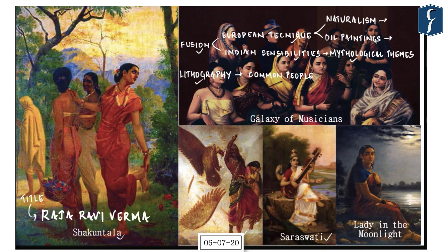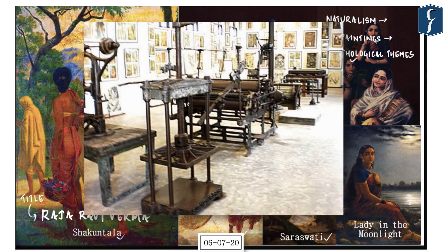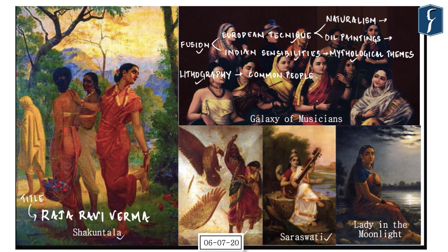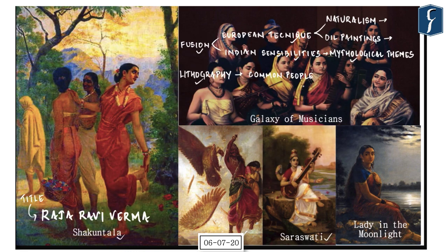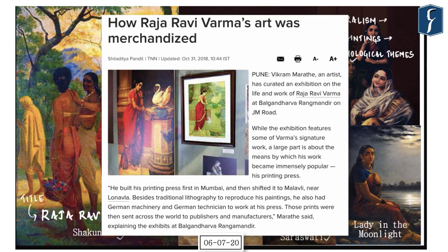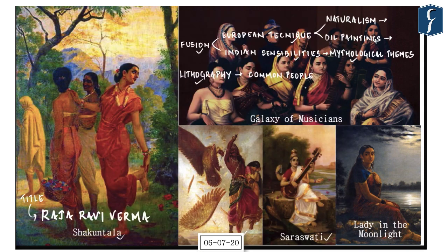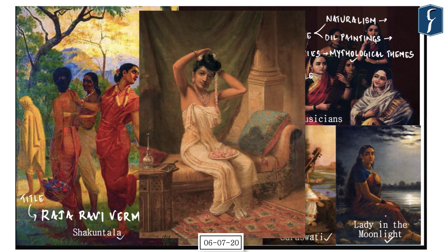The second important contribution of Raja Ravi Varma was in lithography. He started a lithographic printing press in Mumbai in 1894 and later shifted it to Lonavala. This printing press made his paintings available to the public, greatly enhancing his reach and influence. His famous artworks include Shakuntala, Galaxy of Musicians, Jatayu, Saraswati, Lady in the Moonlight, and his most famous work, Nair Lady Adorning Her Hair.